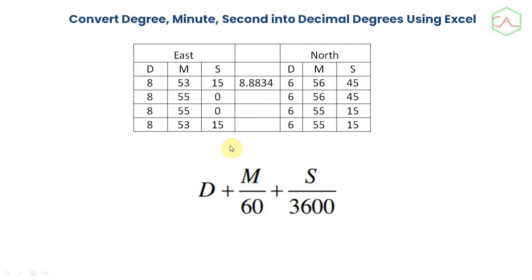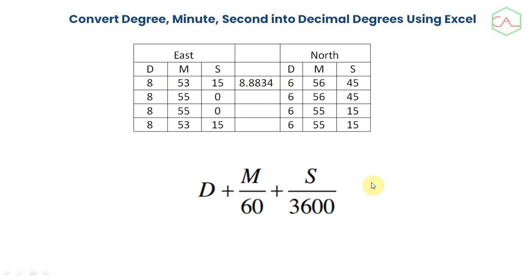The conversion formula is: Decimal Degrees = Degrees + (Minutes / 60) + (Seconds / 3600). The seconds are divided by 3600 — that is 60 times 60 — to bring them back to minutes, then the minutes are divided by 60 and added to the degrees. Using this formula, all your coordinate data will be in decimal degrees and no longer in degrees, minutes, and seconds. We are going to show you how to do that.